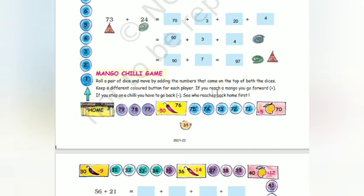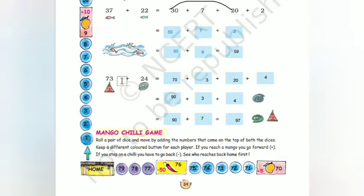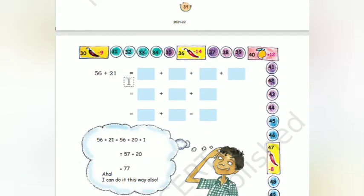Mango-chili game: roll a pair of dice and move by adding the numbers that come on top of both dice. Keep a different colored button for each player. We have already played the snake and ladder game. Now likewise you can play this chili game - if you land on a chili, you go back. See who reaches home first. You need a pair of dice and colored buttons for each player.